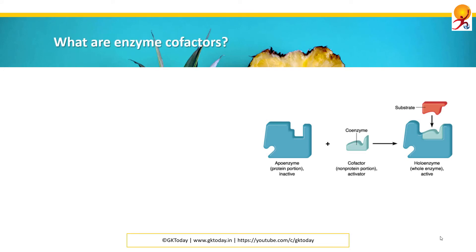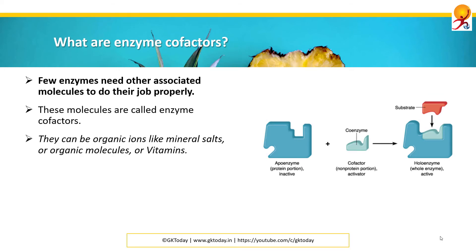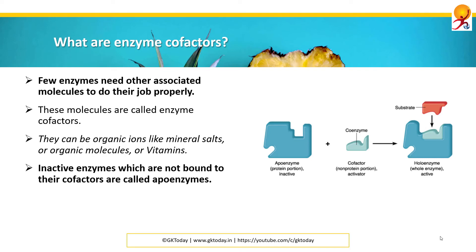What are enzyme cofactors? Few enzymes need other associated molecules to do their job properly. These molecules are called enzyme cofactors. They can be organic ions like mineral salts, organic molecules, or vitamins. Inactive enzymes which are not bound to the cofactors are called polyenzymes.